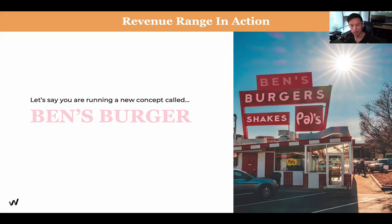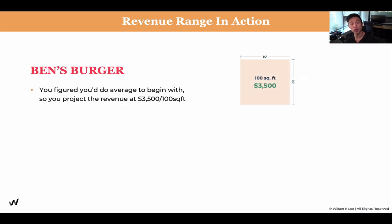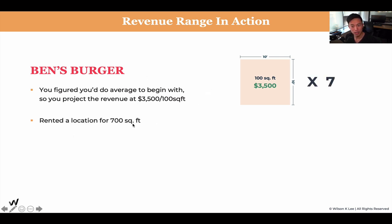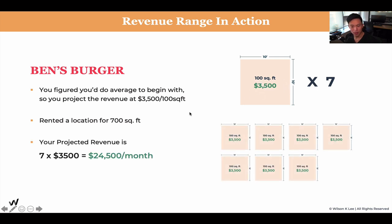Let's dive in as an example using Ben's Burger — and we're going to be using this example for the rest of the module, so make sure you pay attention and always come back to Ben's Burger, because that's what we're building. So you figured that with Ben's Burger, you're going to be making not $3,000 — you think you're a little bit better than that — but you're not as aggressive as $4,500 per 100 square feet. So you settle with $3,500 per 100 square feet as your projection. Let's say the location you're renting is 700 square feet. That means you use this number times seven to get the projected revenue per month for your location.